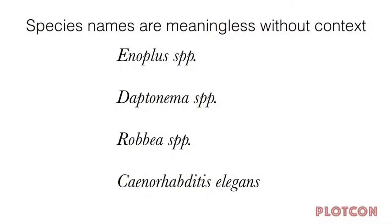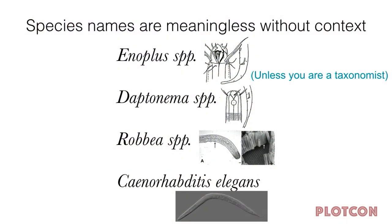Species names are really meaningless without context. I'm a taxonomist, and because of my background and training, I'm getting information out of these strings of text that most people in the audience would not be able to infer. I can look at a species name and get an image in my head of what the head shape of a nematode worm looks like, whether or not they have teeth. I can infer whether or not the species has potential microbial symbionts. And for C. elegans, I can tell that's contamination because C. elegans doesn't live in the ocean — if I have that in my data set, someone in the lab has basically ruined my sample. This is information you really can't get unless you have that specialized training.